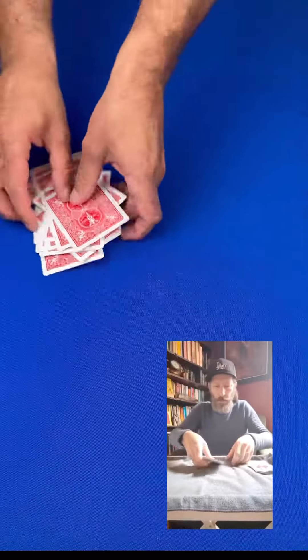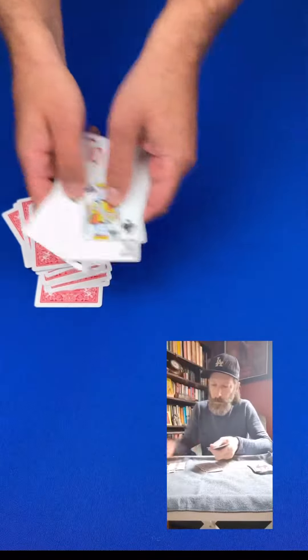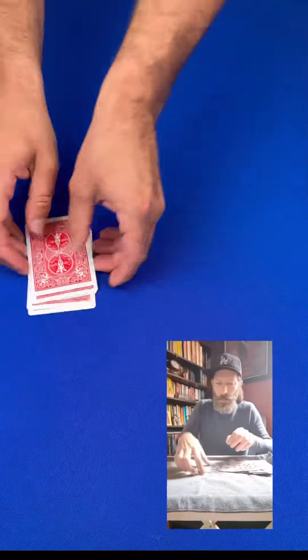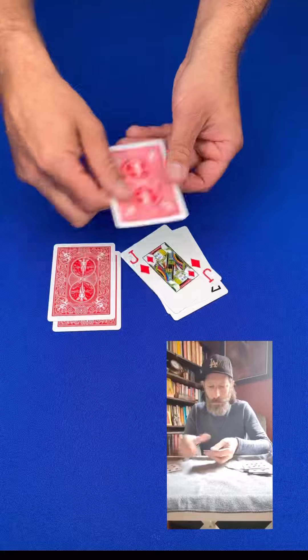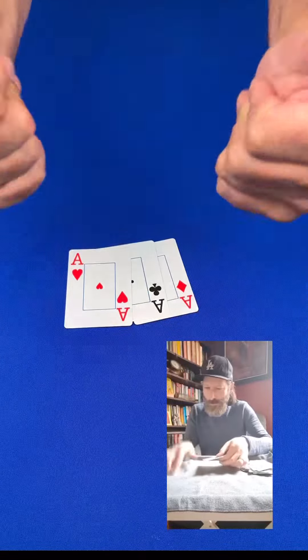Throw the face up cards away and then repeat the process, just like this. Do exactly the same again and throw away the face up packet and then do it again. Keep doing this until you've got just three cards left. And the three cards left will be the three aces every single time.